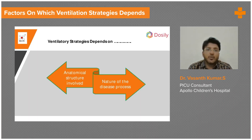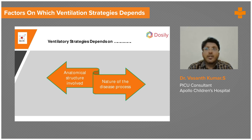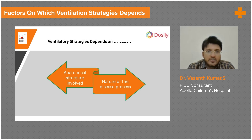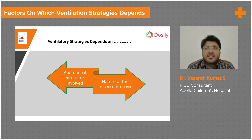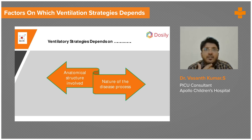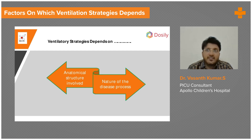Before you decide on what strategy you want to adapt for the patient, first you should know which structure is involved — whether it is a normal lung ventilation or a diseased lung ventilation. Even in a normal lung, it can be a CNS problem, traumatic brain injury, or neuromuscular weakness where the lung parenchyma and airway are fine. You are ventilating for airway protection because the patient is not able to cough well or handle secretions.